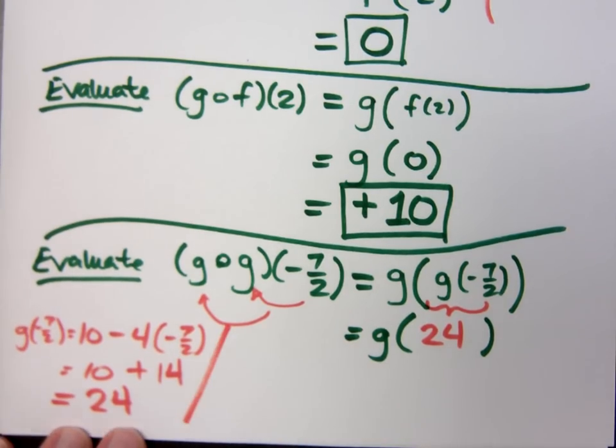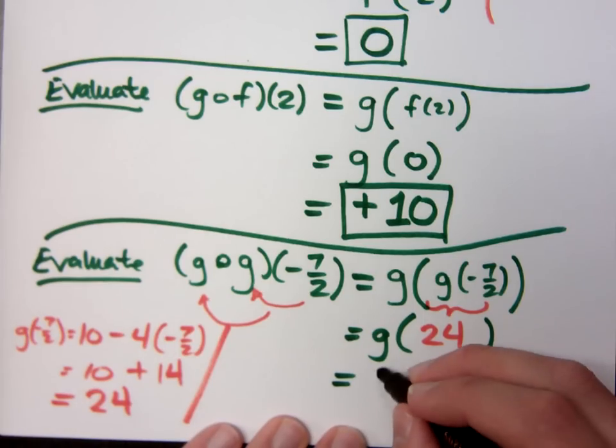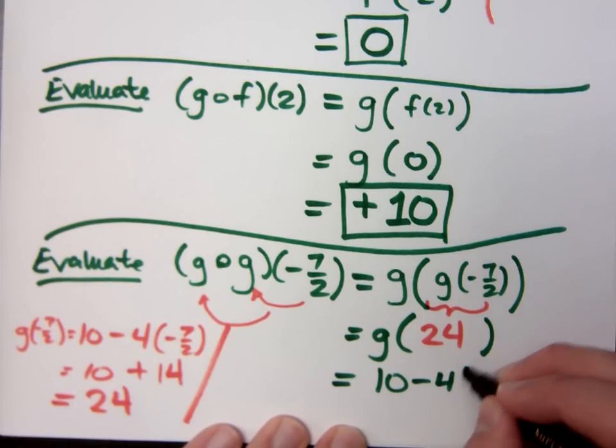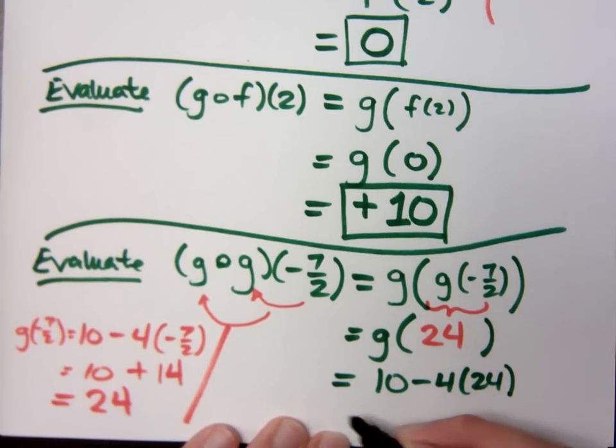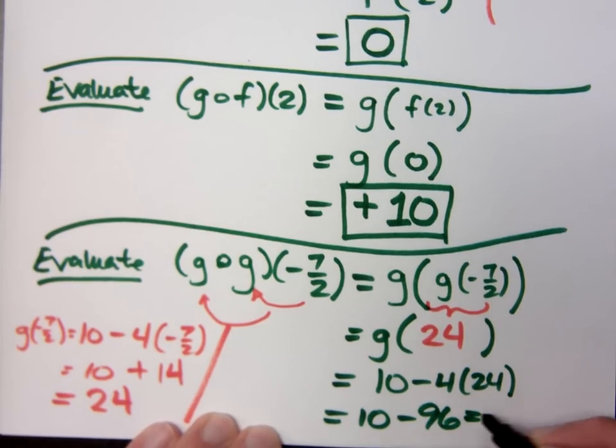So all of this guy right here gives me 24, so now I'll plug the 24 into g. What's g of 24? Negative 86. Gives you negative 86, because if you do the work, that's 10 minus 4 times 24. So 10 minus 96 is equal to negative 86.